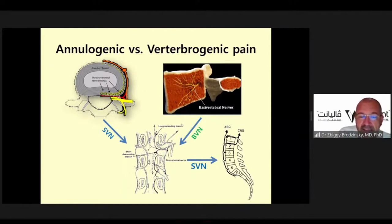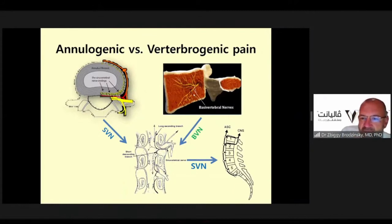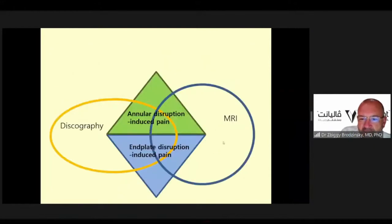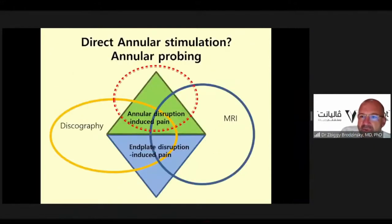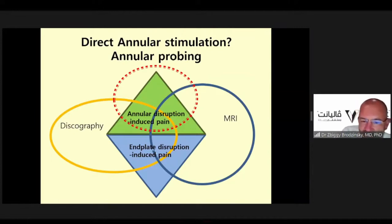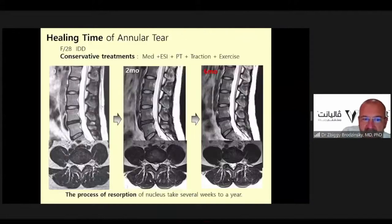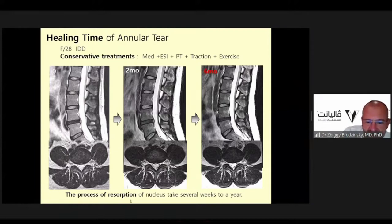Sometimes we differentiate to find the pain generator and do the less invasive option, which is annuloplasty. For direct annular stimulation and annular probing, we perform MRI discography and make considerations for end plate and annular disruption. For annuloplasty, we try to find the most minimally invasive approach. As shown, there is a patient with annular tear and healing after six months — the process of resorption of the nucleus takes several weeks to a year.